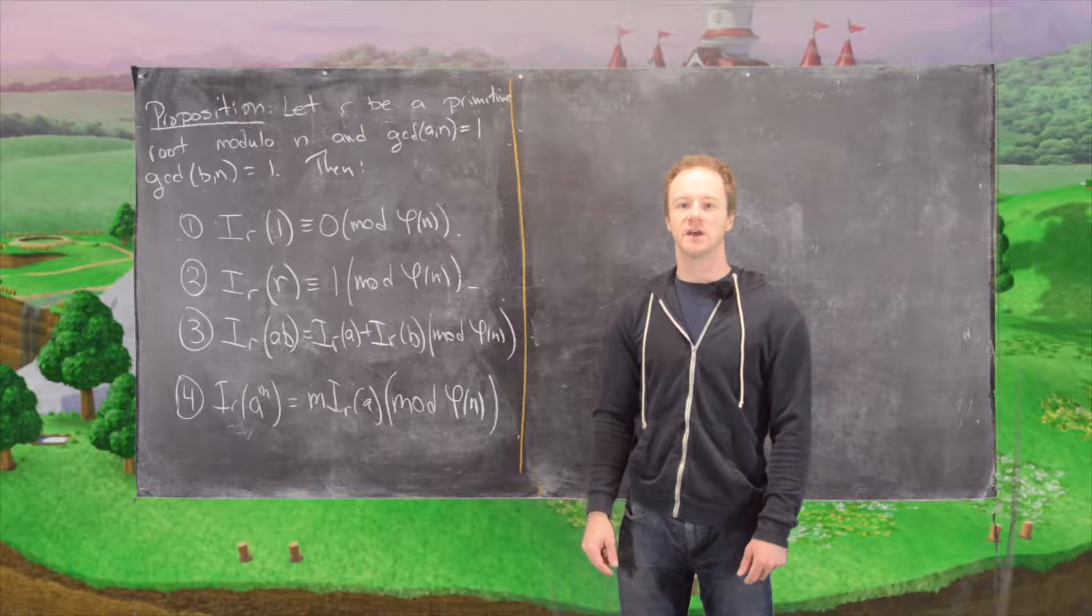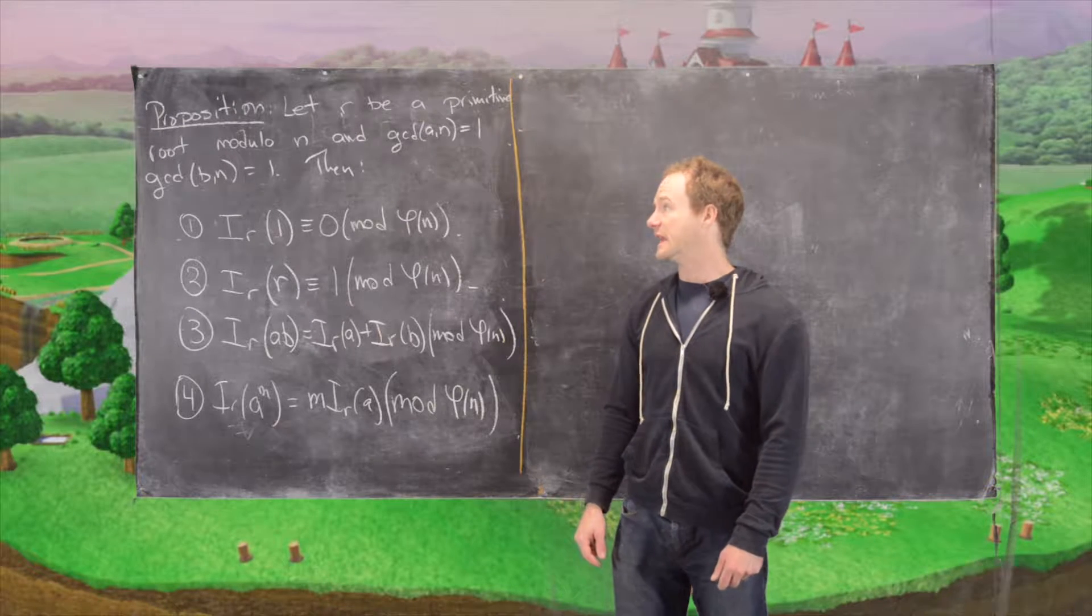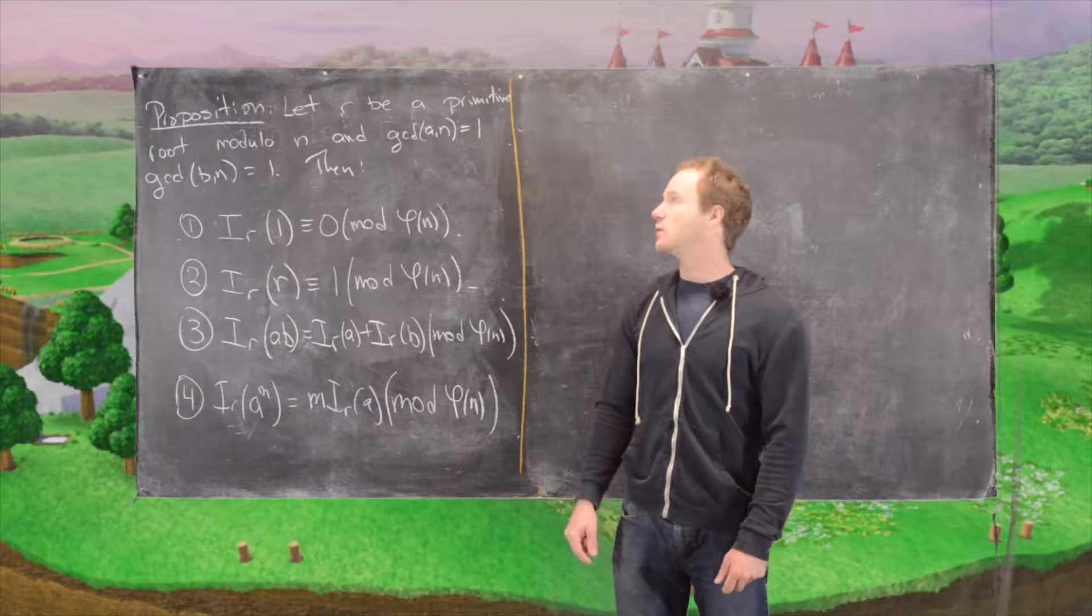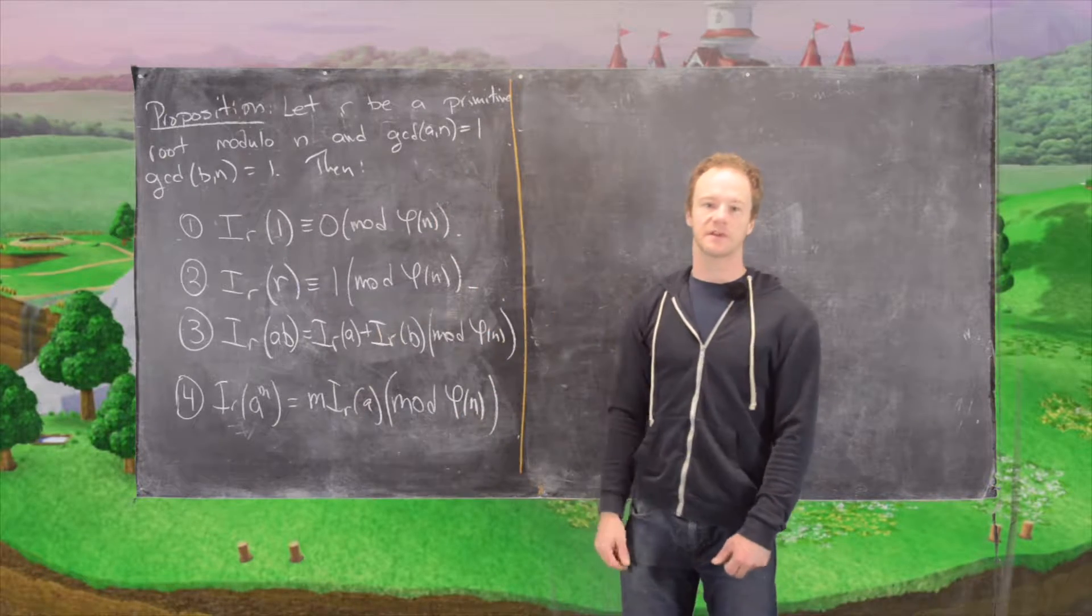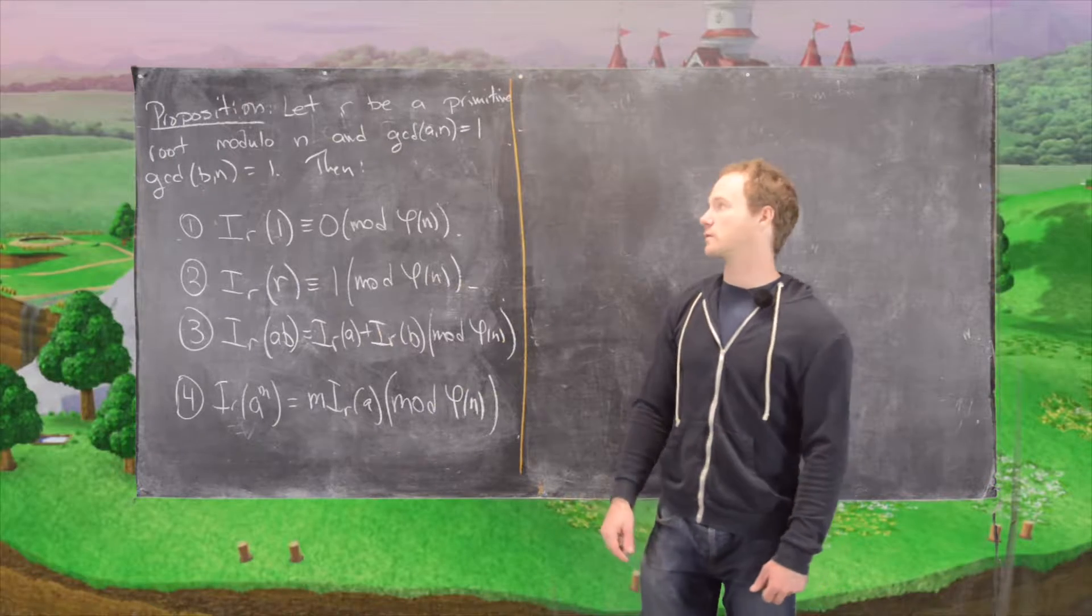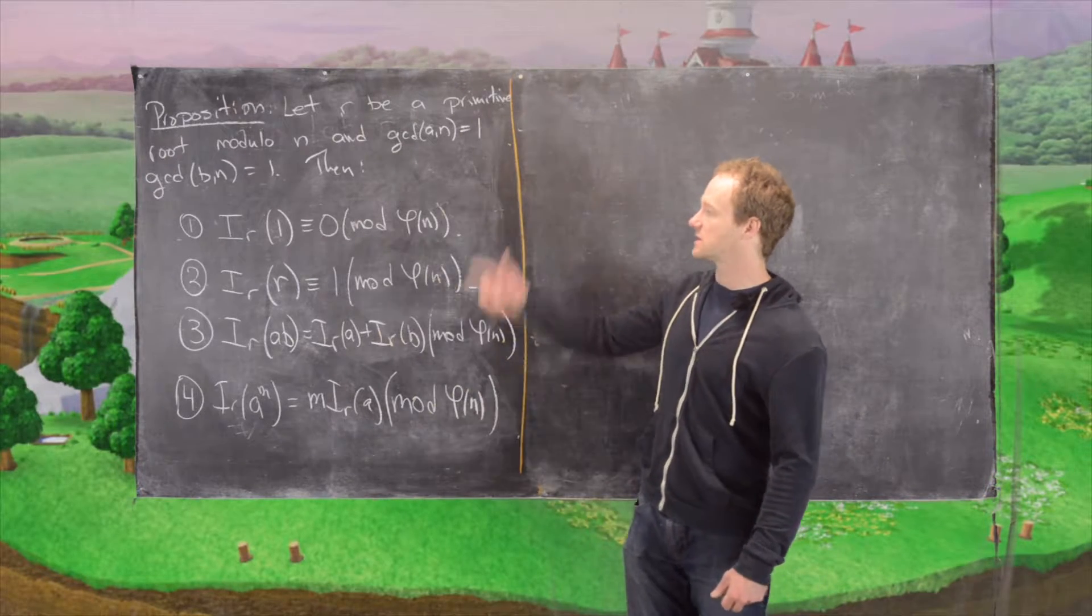In this video, we're going to look at a result that has to do with the index modulo n with respect to some primitive root. And it actually involves something that looks a lot like logarithm rules.